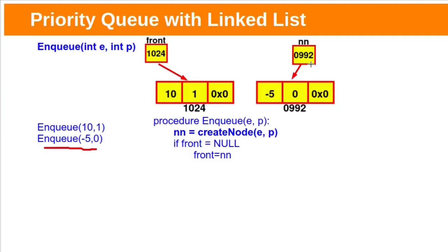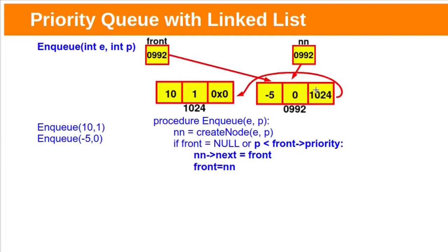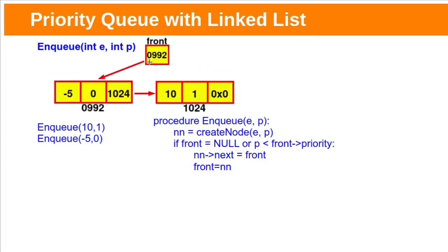When we perform another enqueue, a new node is created and its address is stored in the new node pointer. Here front is not null, so we need to decide where to add this node. In a regular queue we add at the rear, but in a priority queue we add based on priority values. Comparing the new node's priority with the front node's priority — if the new node has higher priority than the front node (smaller number means higher priority), we insert the new node before the front. We store the front node's address in the new node's next field, then assign front with the new node's address. Now front points to this new node.